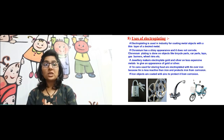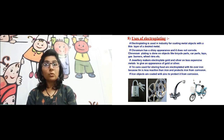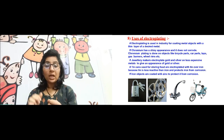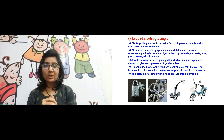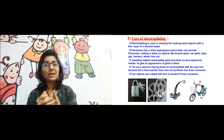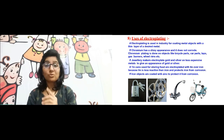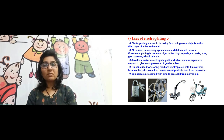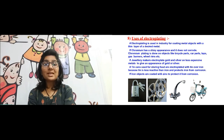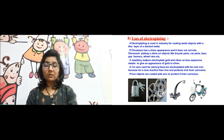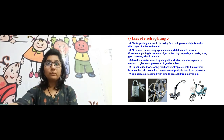Jewelry makers also use electroplating to give silver and gold coatings on ornaments. Tin cans used for storing food are also electroplated — they are made of iron, but a tin coating is given on top so they look attractive and do not corrode, since tin is less reactive than iron. Iron objects can also be coated with zinc to protect from corrosion — when zinc is coated on iron it is called galvanization. These are the uses of electroplating.